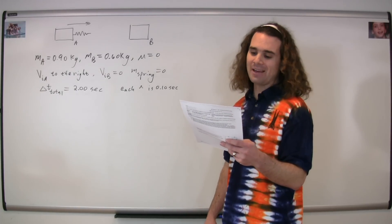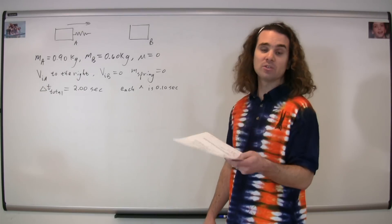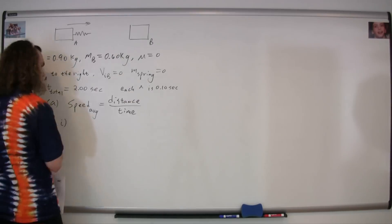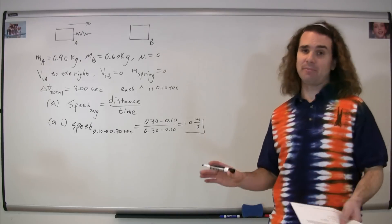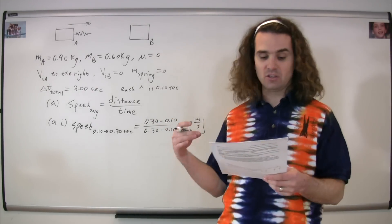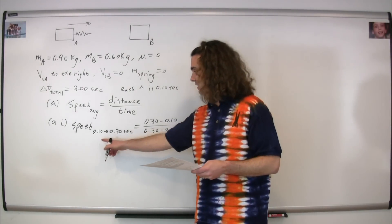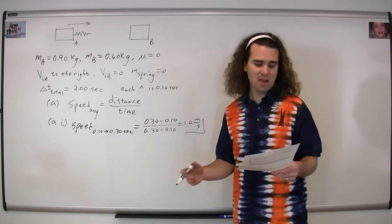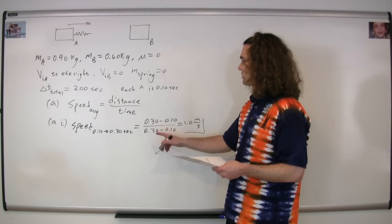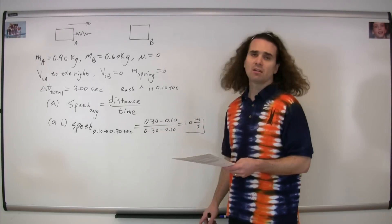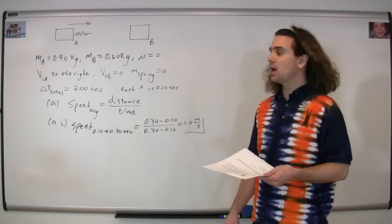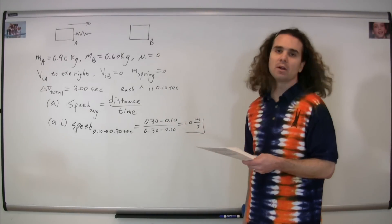The first question, part ai, asks us to determine the average speed of glider A during 0.10 to 0.30 seconds. The equation for average speed is just distance over time. We can read the position off the ruler: at 0.30 seconds the position is 0.30 m, and at 0.10 seconds it is 0.10 m. So the distance is 0.30 minus 0.10, divided by the time 0.30 minus 0.10, giving us an average speed of 1 meter per second.